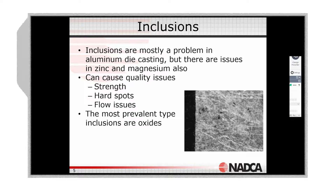Inclusions are mainly a problem in aluminum, but they also occur in zinc and magnesium. In magnesium, you're going to be worried about magnesium oxide and foreign materials, because you're dealing with high temperatures. If you're not using iron pots for zinc, and you're using refractory pots or refractory materials for magnesium, any refractory material can get in there. These inclusions can cause problems with strength — they become extremely hard spots in the casting matrix in any one of these alloys.